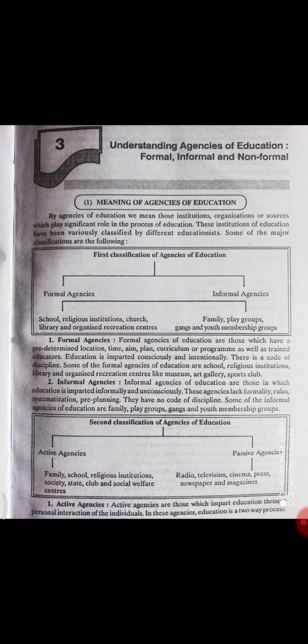جہاں تک agencies of education کا تعلق ہے، ہمیں یہ سمجھنا ہے کہ education جو ہے، یہ کس طرح کی agencies ہیں جن سے ہم education حاصل کرتے ہیں۔ سب سے پہلے ہم دیکھیں گے کہ education میں جو agencies ہوتے ہیں، خاص کر وہ agencies جن کو ہم کہتے ہیں institutions، organizations، sources جن کا ایک خاص رول ہے education کے process میں۔